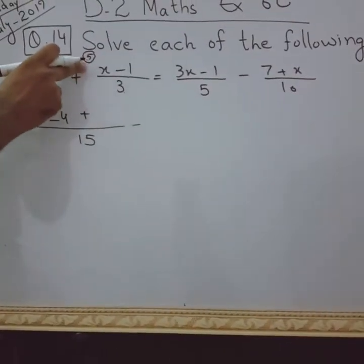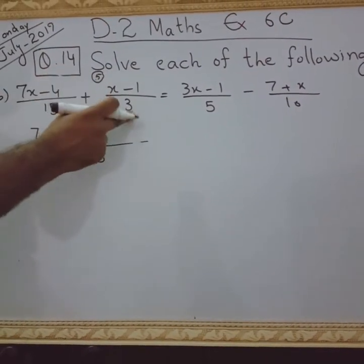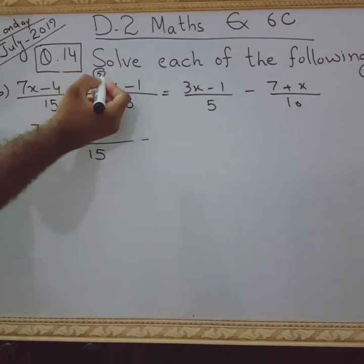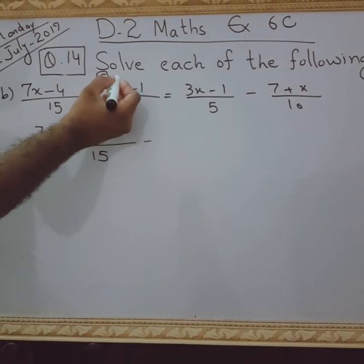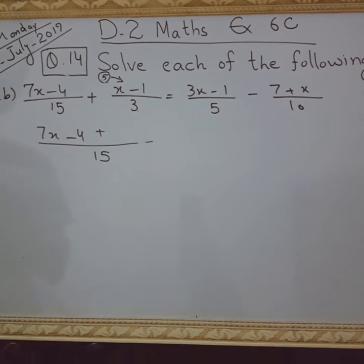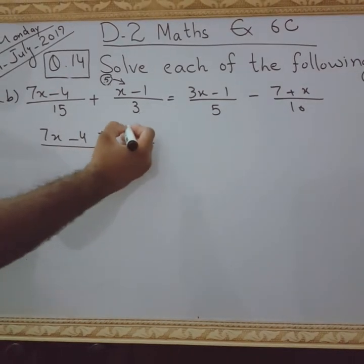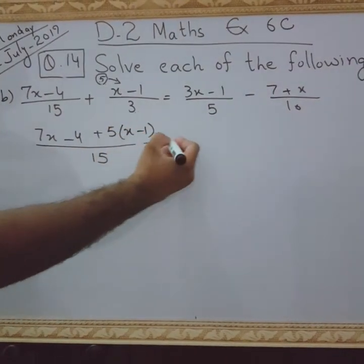This is the time 3, 5 times 15. 5 will be multiplied with this numerator. That's why we have written it nearby the numerator. Like this, we will multiply 5 with x minus 1.